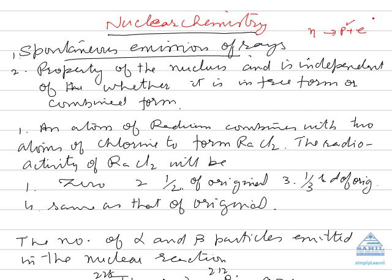Radioactivity continues till a stable isotope is obtained. It attains this by emitting alpha rays, beta rays, and gamma rays.